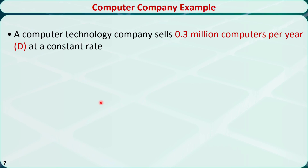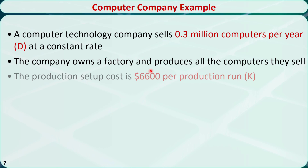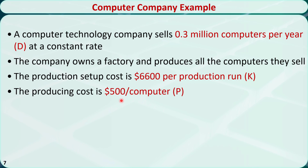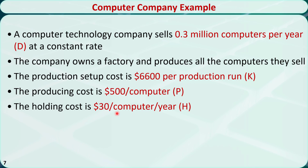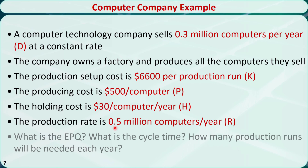Here is an example. A computer technology company sells 0.3 million computers per year — this is D. The company owns a factory and produces all the computers they sell. The setup cost is $6,600 per production run — this is K. The producing cost is $500 per computer — this is P. The holding cost is $30 per computer per year — this is H. The production rate is 0.5 million computers per year — this is R. Since R is greater than D, there will be no shortage.